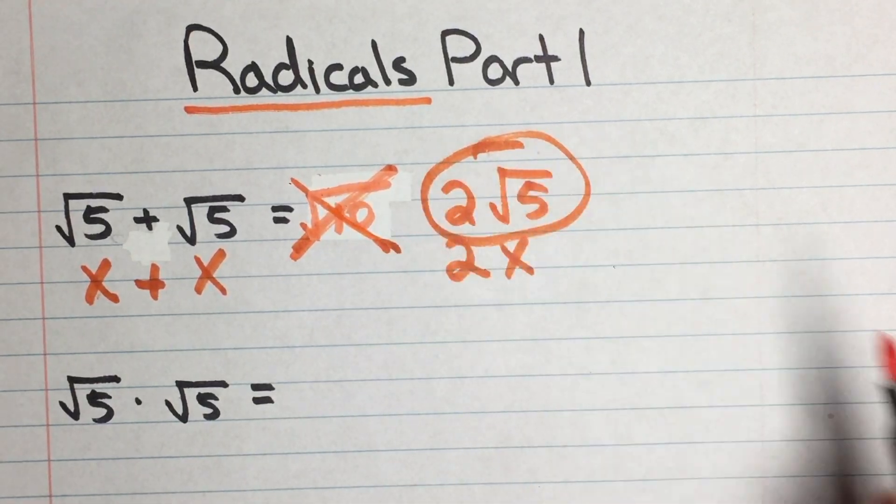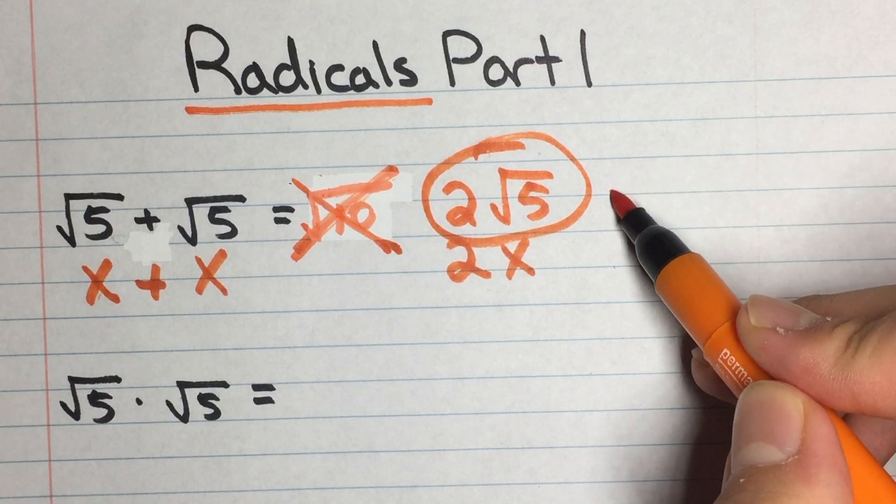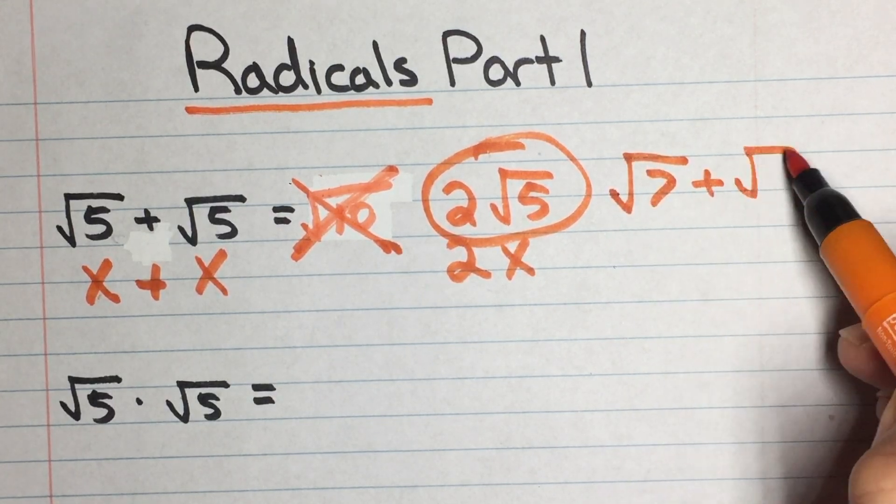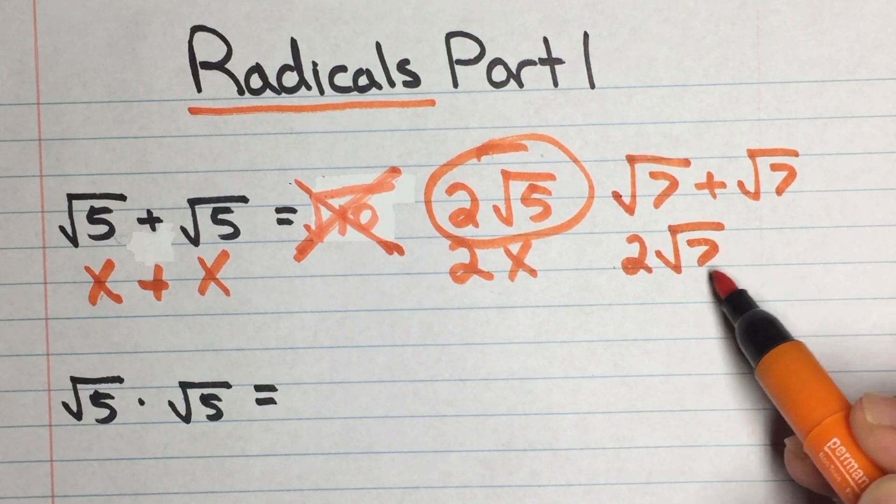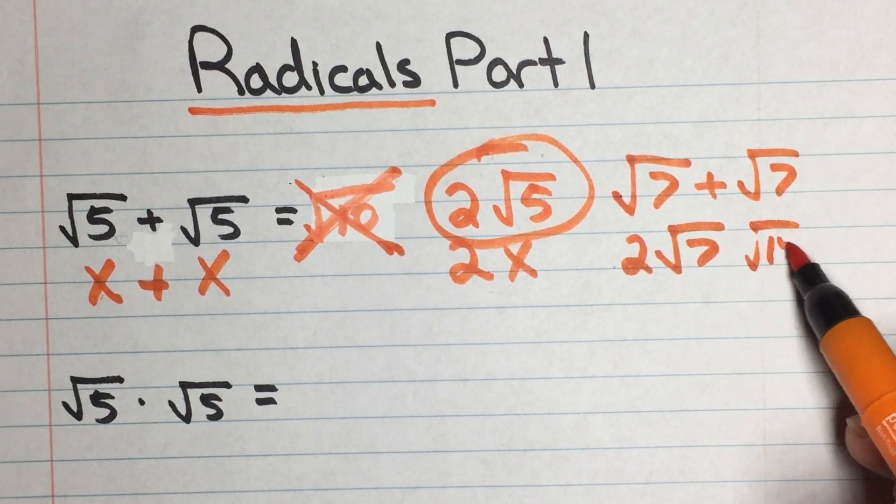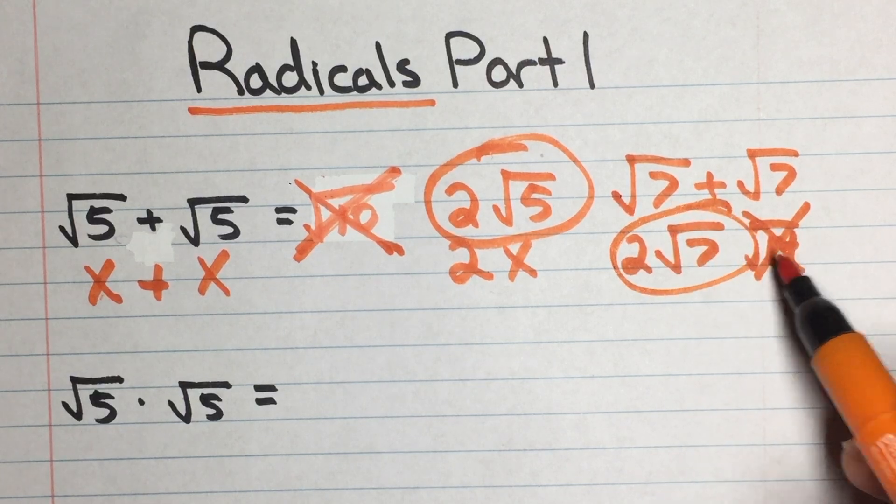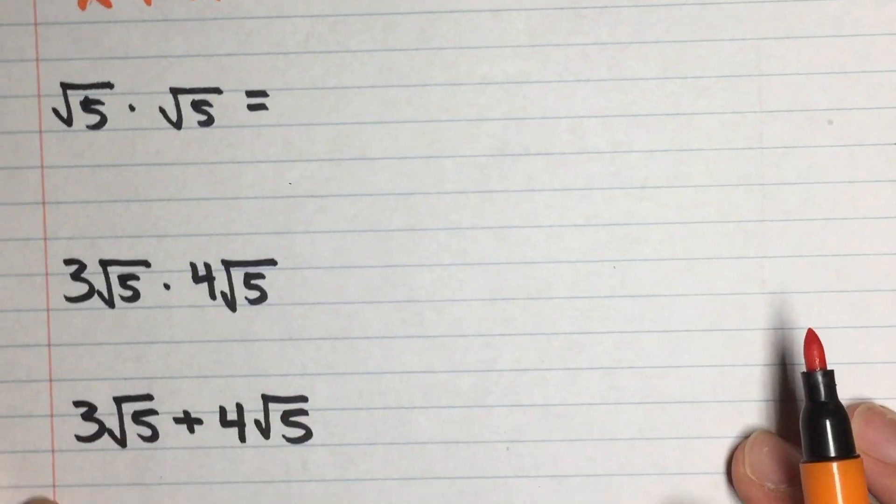This is the wrong answer. So if we had, let's say, root 7 plus root 7, this would be 2 root 7, not root 14. So it would be this, not that. Alright, so let's keep going.